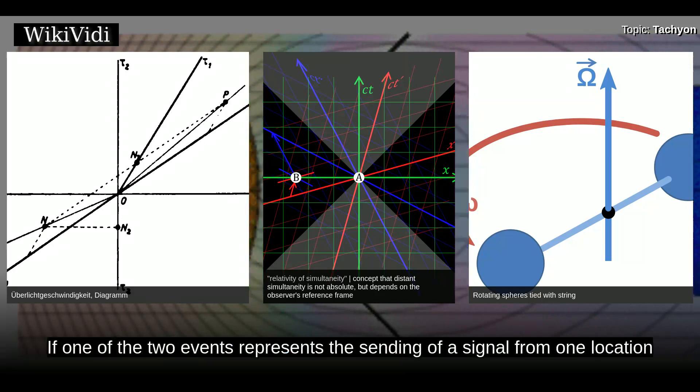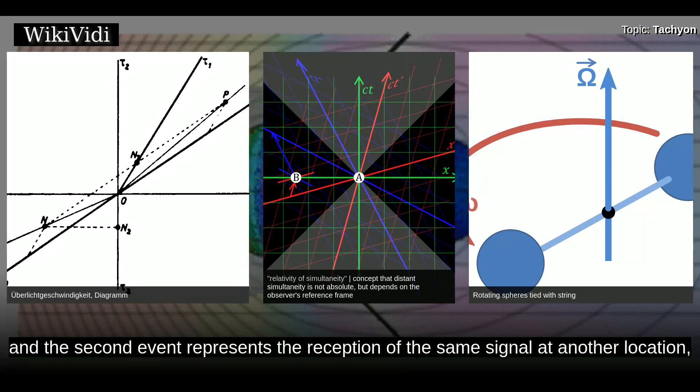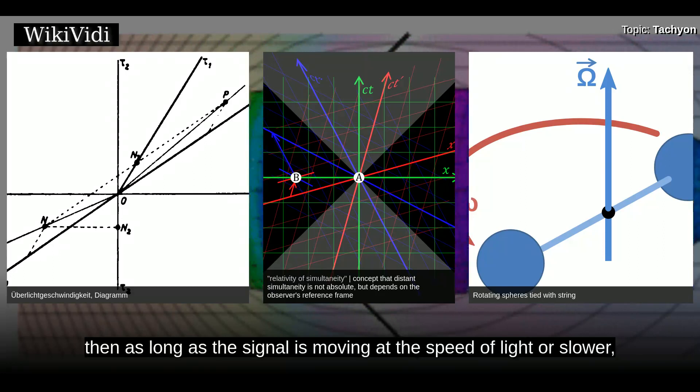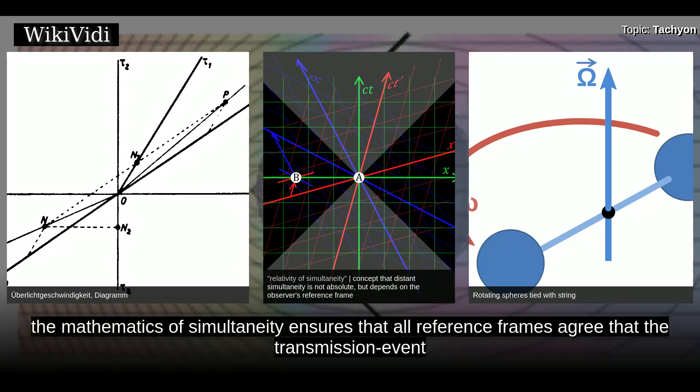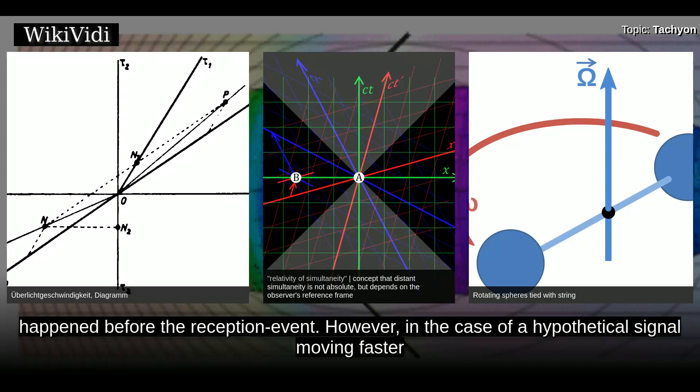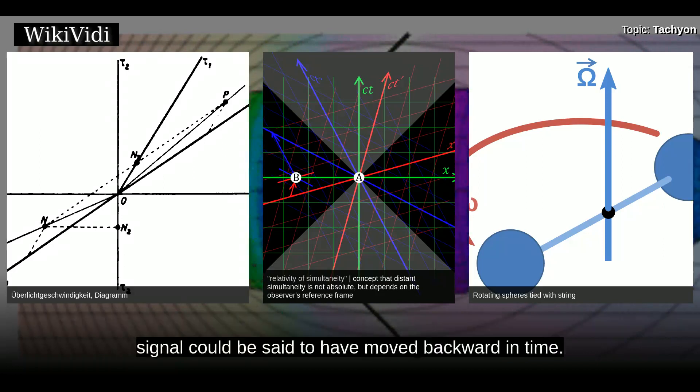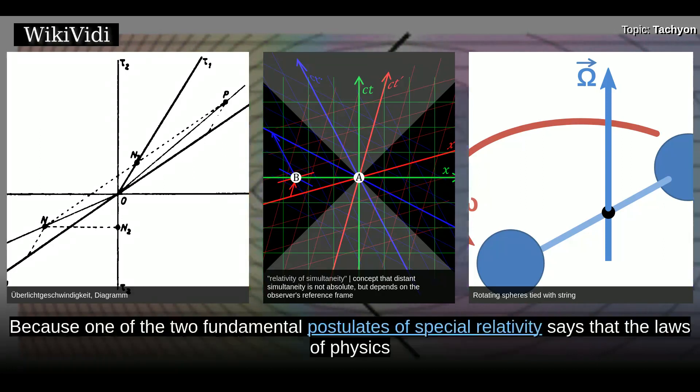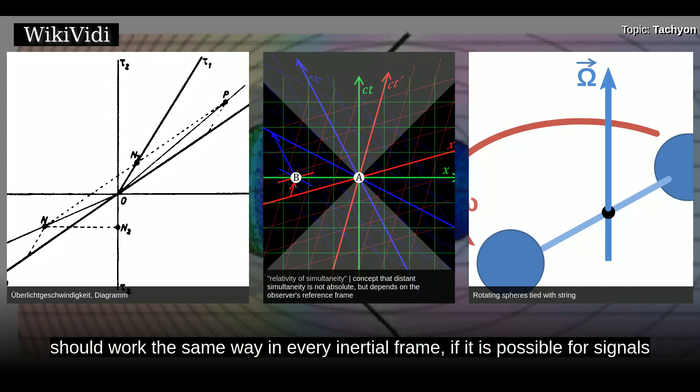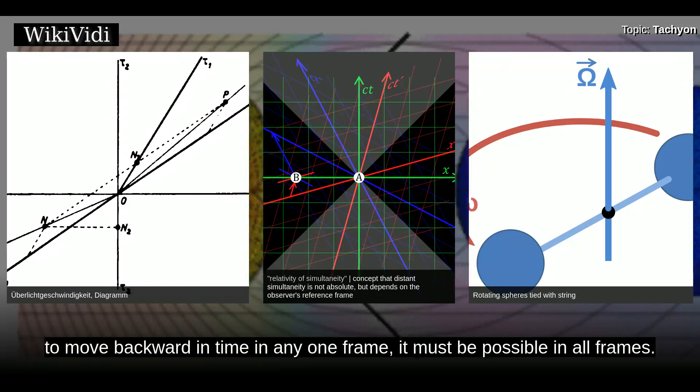If one of the two events represents the sending of a signal from one location and the second event represents the reception of the same signal at another location, then as long as the signal is moving at the speed of light or slower, the mathematics of simultaneity ensures that all reference frames agree that the transmission event happened before the reception event. However, in the case of a hypothetical signal moving faster than light, there would always be some frames in which the signal was received before it was sent, so that the signal could be said to have moved backward in time. Because one of the two fundamental postulates of special relativity says that the laws of physics should work the same way in every inertial frame, if it is possible for signals to move backward in time in any one frame, it must be possible in all frames.